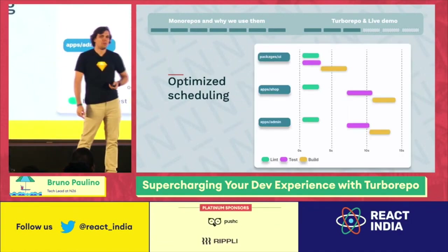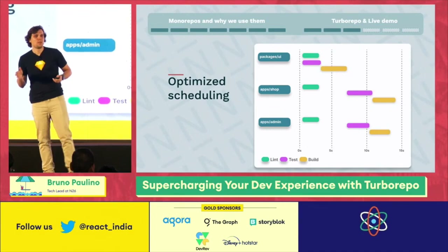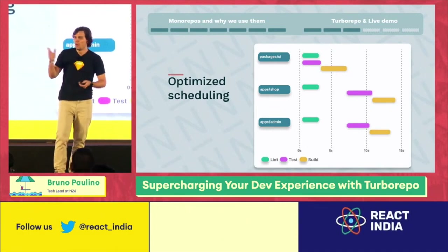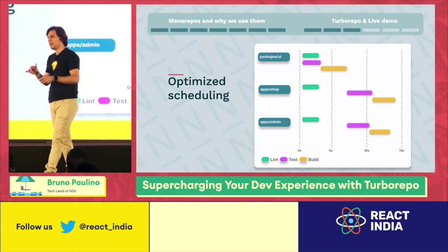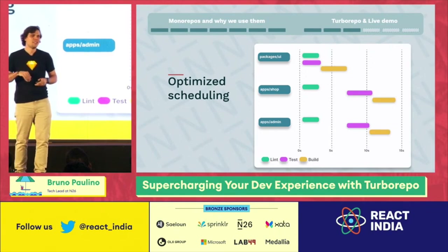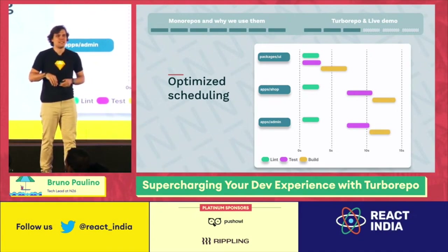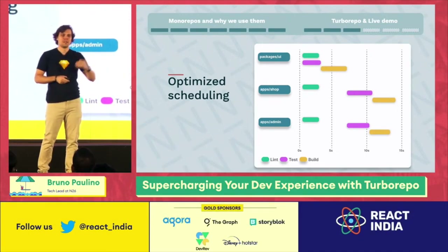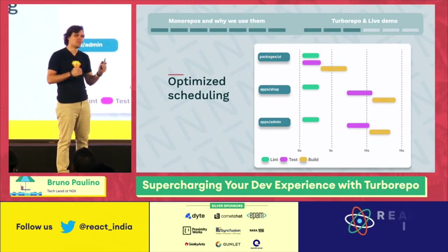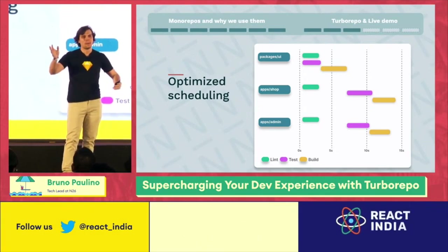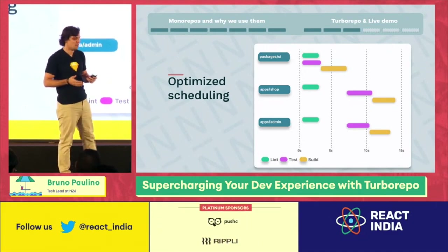Another cool feature is optimized scheduling. Think about it — you have a laptop with a super fast M1 chip, and you're running your test suite across 100 packages in your monorepo. With TurboRepo, it's super easy to specify dependencies between packages, and TurboRepo will run all of them in parallel as much as possible, giving you results in a much faster way.